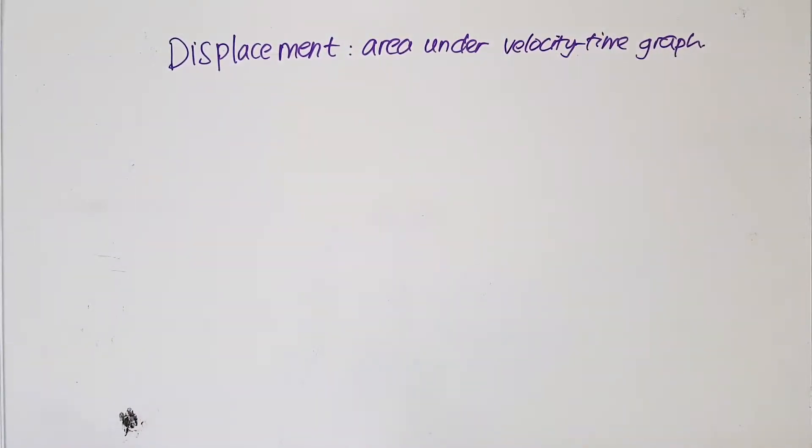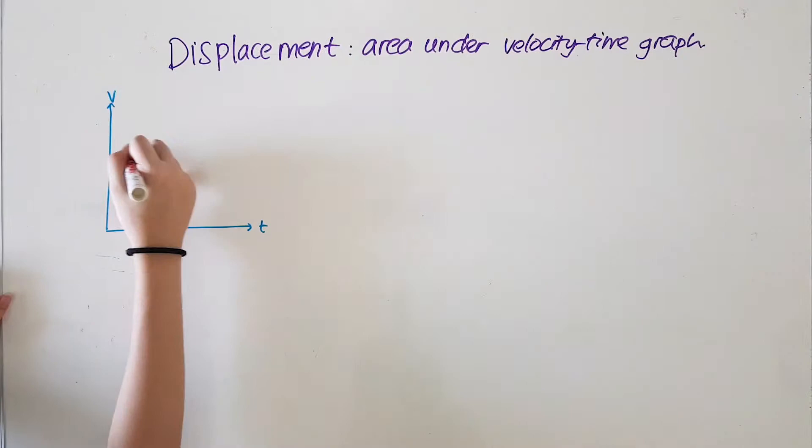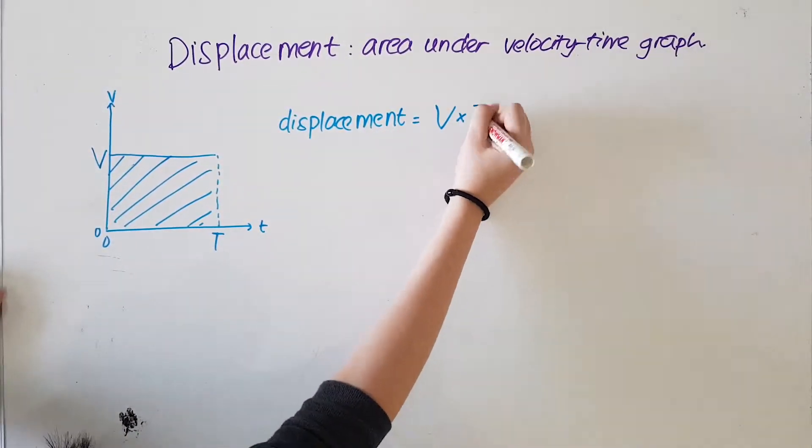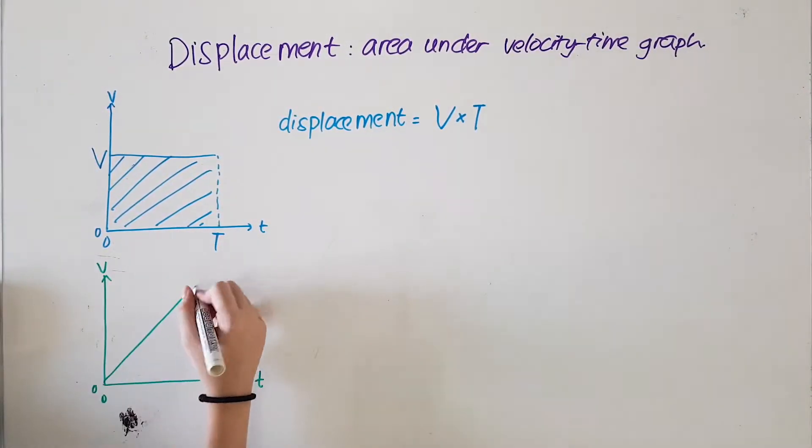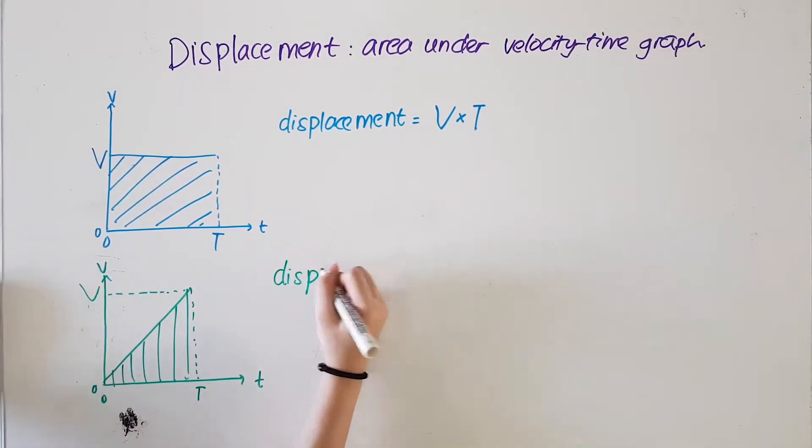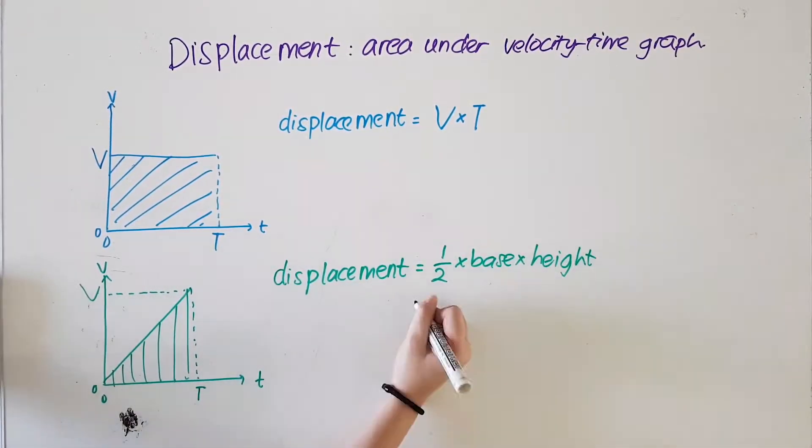Of course, we can't discuss acceleration without displacement. Displacement is the distance moved by an object in a particular direction. In a velocity time graph, displacement is the area under the graph, as shown here.